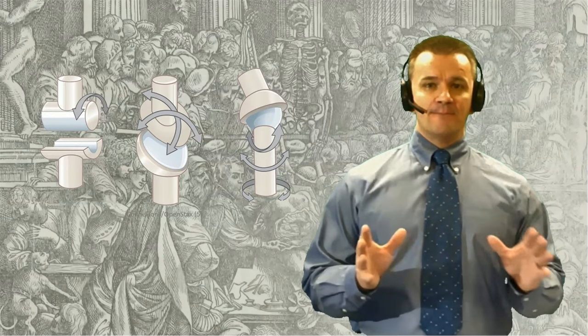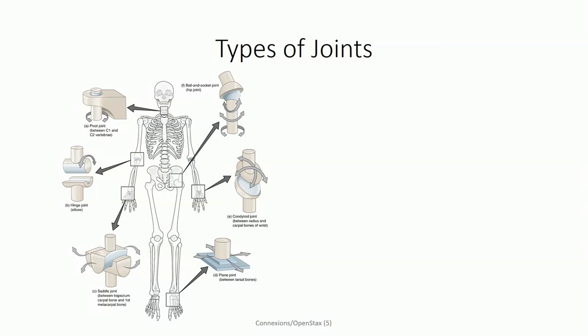The movements permitted at a given joint are dictated by the architecture of that joint, specifically the geometry of the articulating surfaces. Synovial joints can be subclassified into six different types based on their architecture, which provides us with information on how these joints move. Each joint type can be characterized as being uniaxial, permitting movement along a single plane; biaxial, permitting movement within two planes; or multi-axial, permitting movement in multiple directions. The first three joints we will look at demonstrate how slight changes in architecture can change a joint from uniaxial to biaxial to multi-axial.